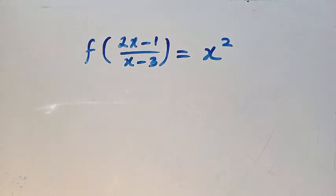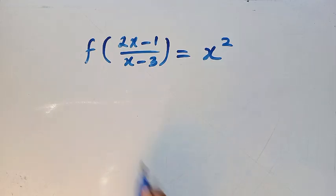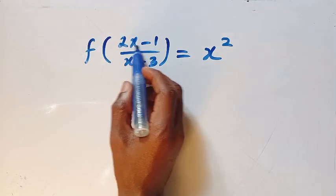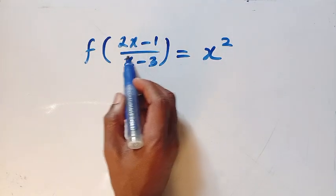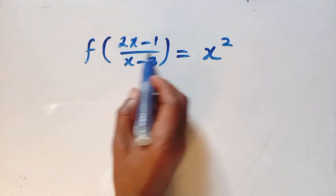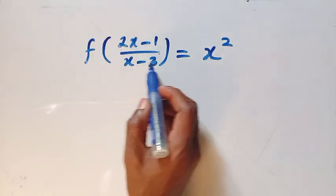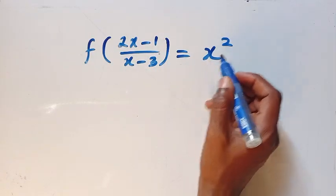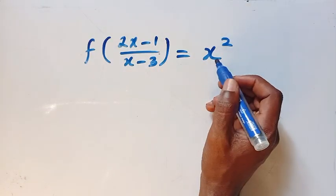Good day viewers, you are welcome. How to solve this nice functional equation: given that f of (2x minus 1) over (x minus 3) equals x to the power of 2.